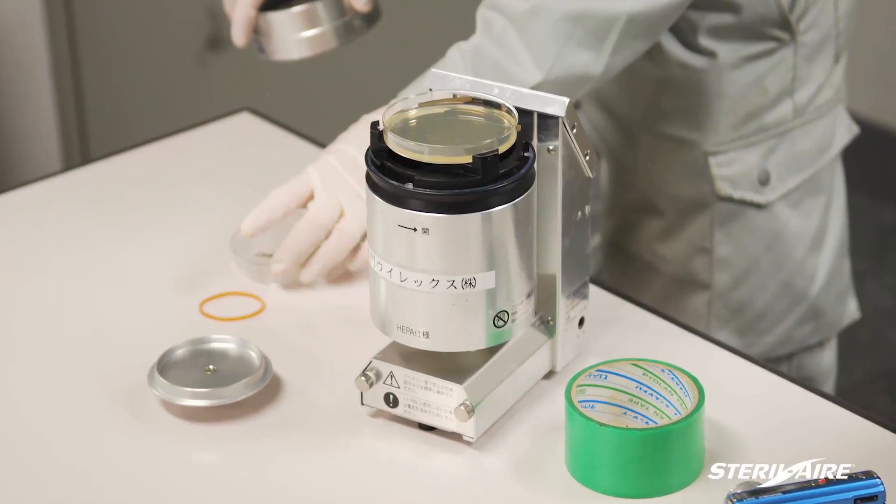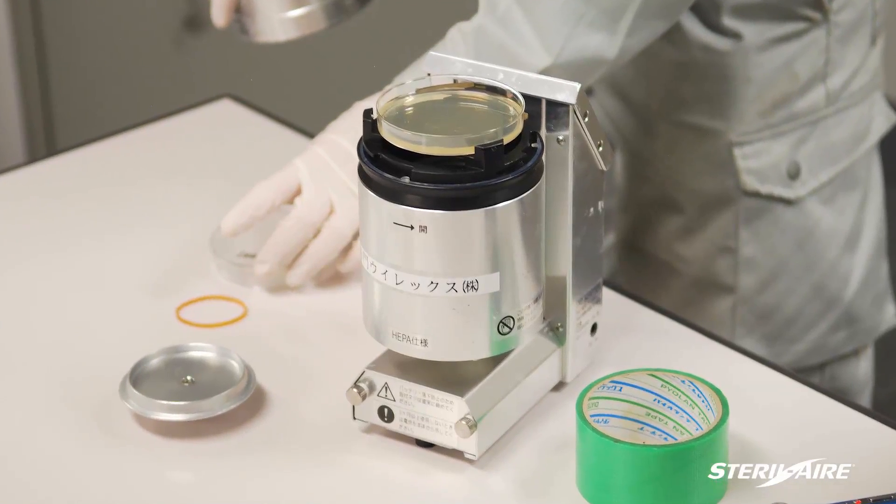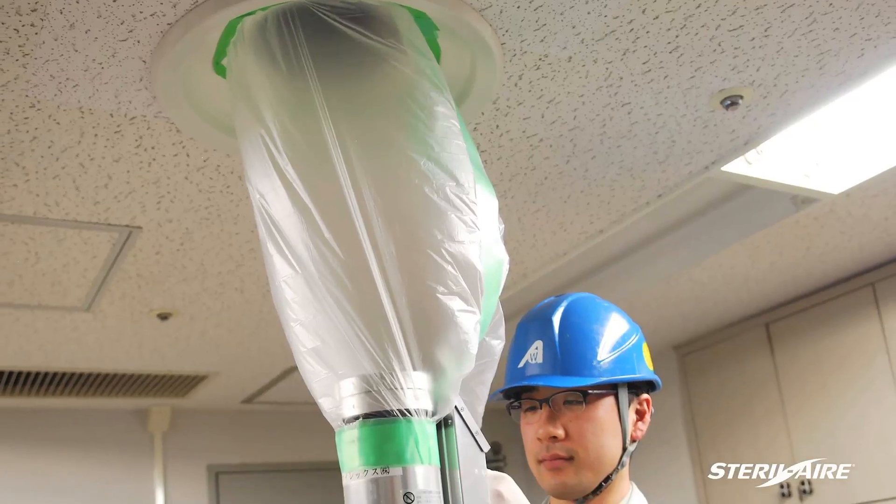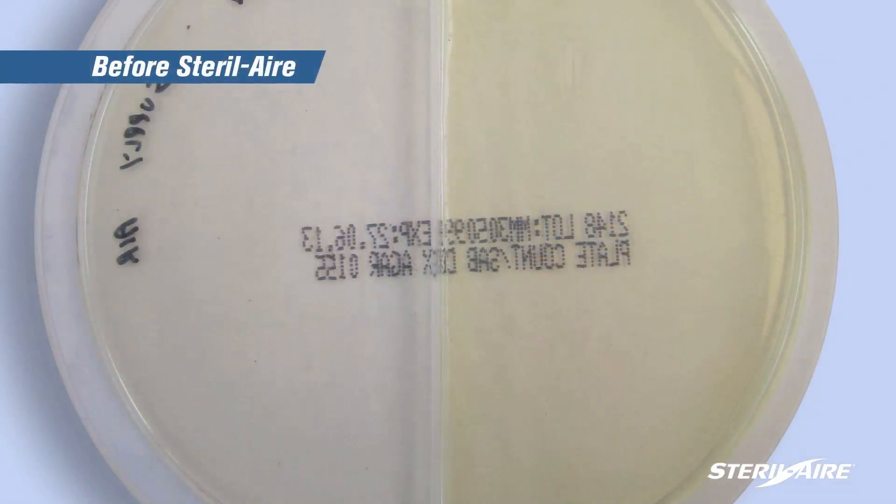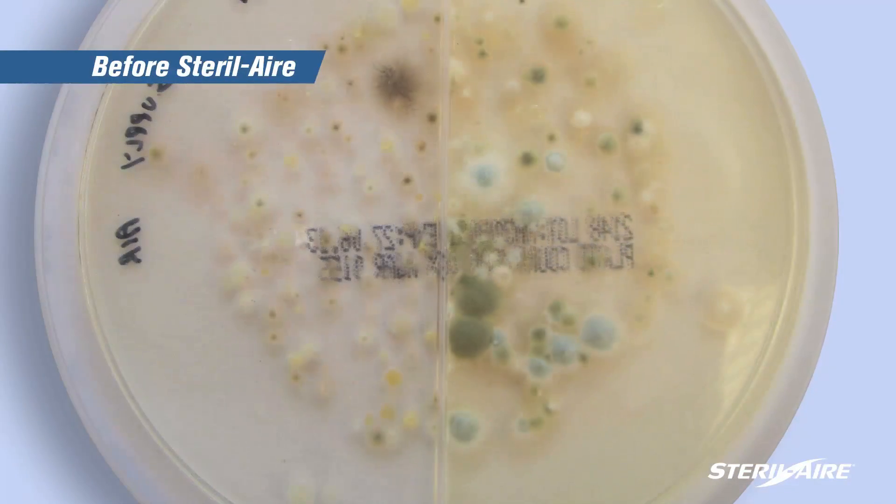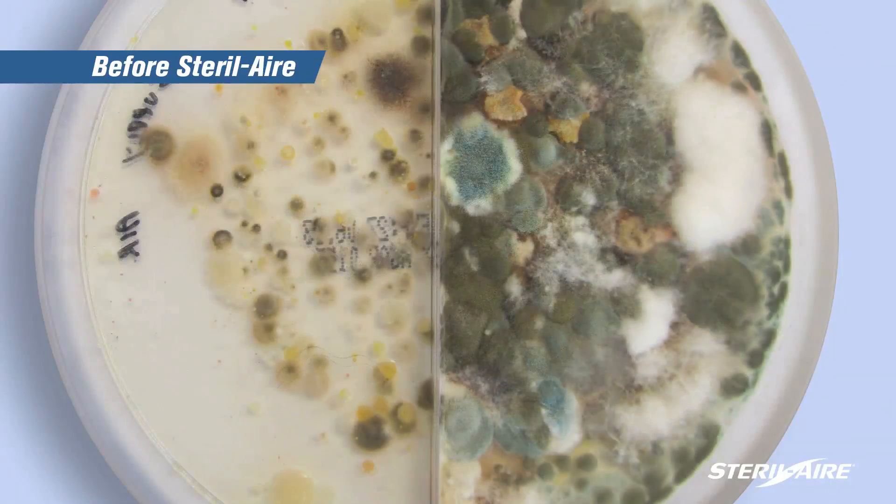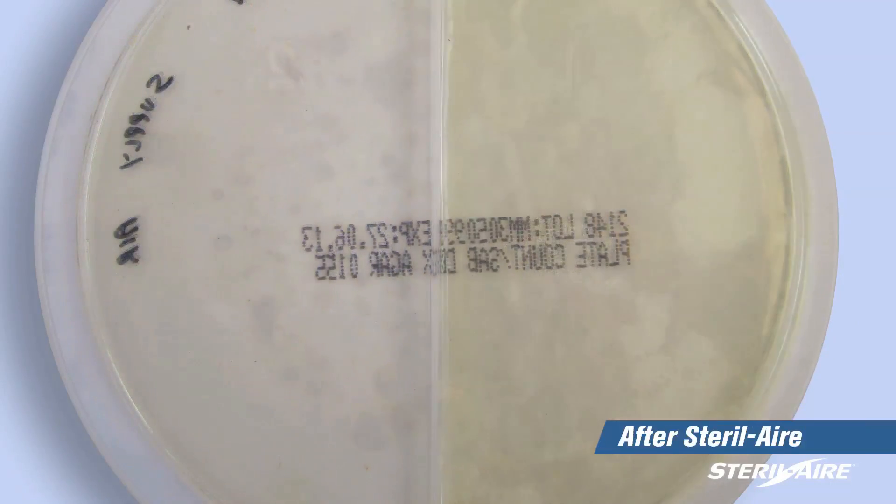This can also be verified by checking for bacteria and mold with an air tester, positioned at the room air supply duct. Typical examples were taken before sterile air, and after sterile air.